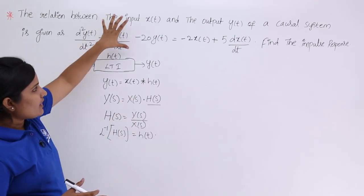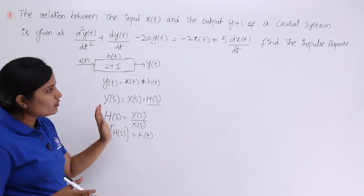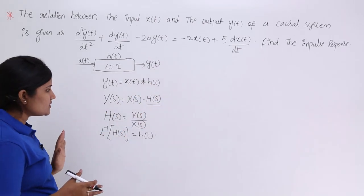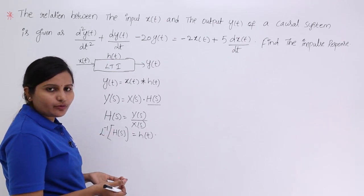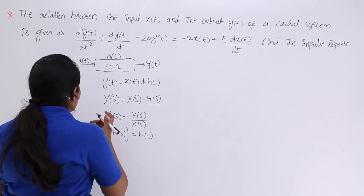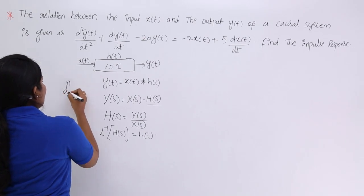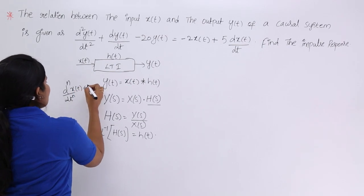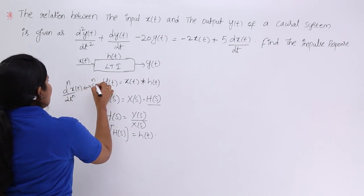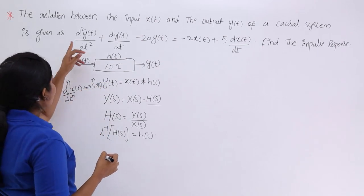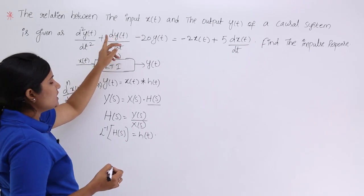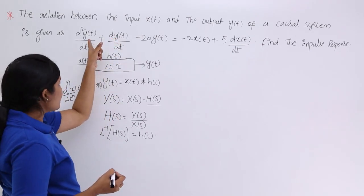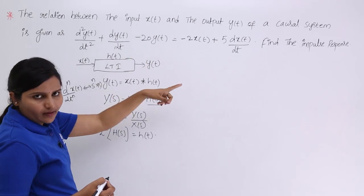Before going into the procedure, I want to discuss the differentiation property of the Laplace transform. The Laplace transform of dⁿx(t)/dtⁿ is sⁿ·X(s). So if you have d²y(t)/dt² you get s²·Y(s); if you have dy(t)/dt you get s·Y(s); and y(t) alone gives Y(s).